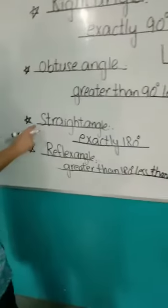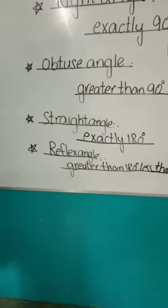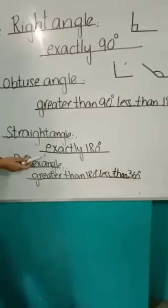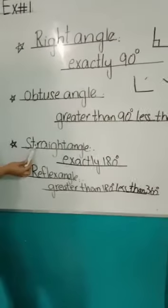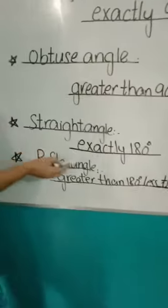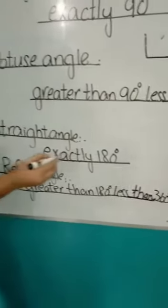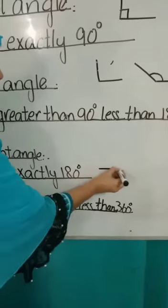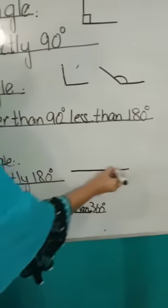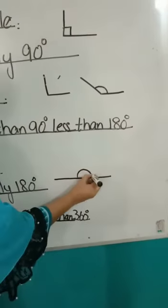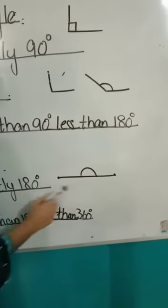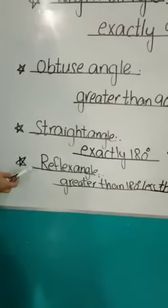Now the next: straight angle. Straight angle is an angle which is exactly 180 degrees. We draw here a 180 degree angle — it is straight. The straight angle is also called 180 degrees.